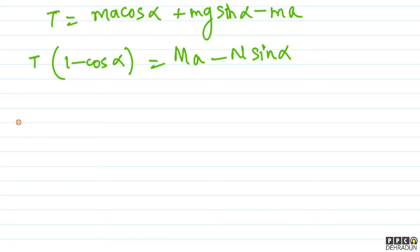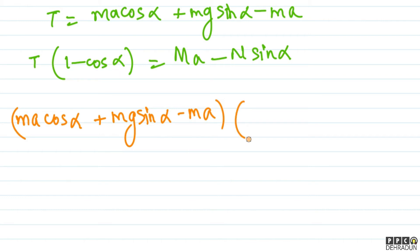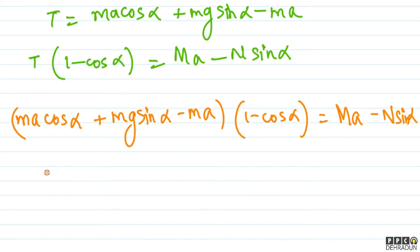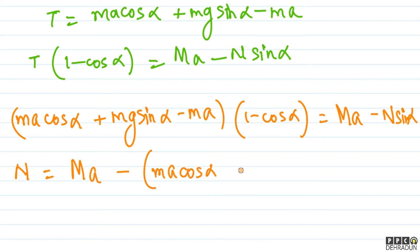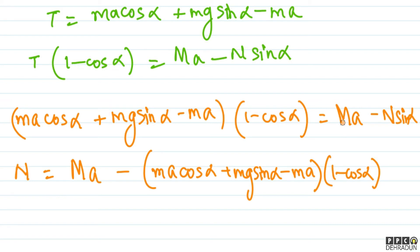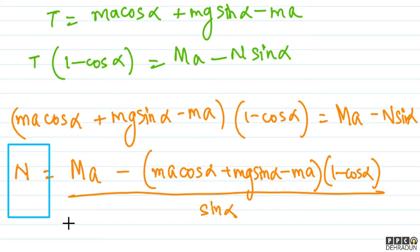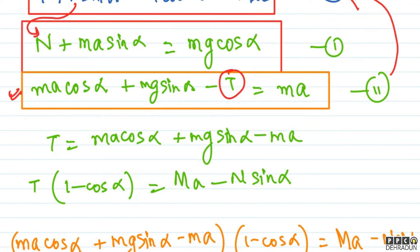तो tension = MA cos alpha + mg sin alpha minus M into A। अब tension को equation 3 में भरते हैं। T multiplied by (1 minus cos alpha) = capital MA minus N sin alpha। अब tension की value put करते हैं: MA cos alpha + mg sin alpha minus MA, whole multiplied by (1 minus cos alpha) = capital MA minus N sin alpha। यहाँ से N की value मिलने वाली है।